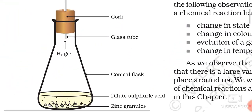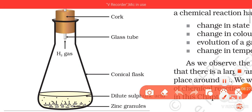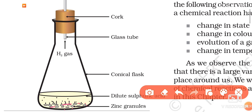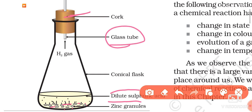Activity number 1.3: We take a conical flask and add zinc granules to it. Then we add dilute sulfuric acid. After adding the acid, we fit a cork with a glass tube. As soon as the dilute sulfuric acid comes in contact with the zinc granules, a large number of gas bubbles start evolving from the zinc granules.